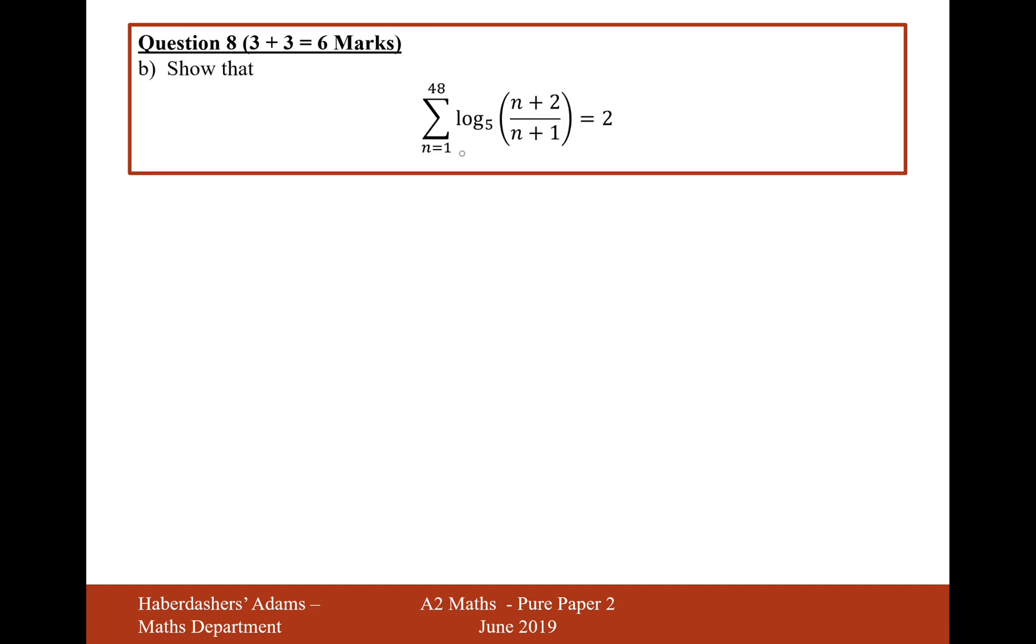Part B is show that the summation from 1 up to 48 of log base 5 of n plus 2 over n plus 1 equals 2. Okay, this is a difficult question, but let's get started. Let's write out the first couple of terms and see what happens in this pattern. So if we put 1 in first, it's going to be log 5 of 3 over 2 plus log 5 of 4 over 3, when you put in the number 2. Let's now put in the number 3, log 5 of 5 over 4.